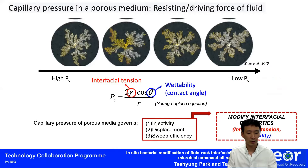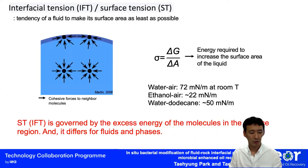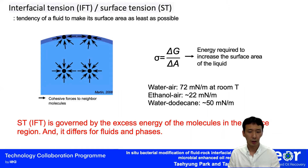Interfacial tension, or IFT in short, is determined by the excess energy of the molecules at the interface. This differs with the fluids. For example, water and air will have 72 mN/m, and ethanol-air will have 22 mN/m, and water and dodecane — which is typically used as a light oil simulant — has an interfacial tension of 50 mN/m.